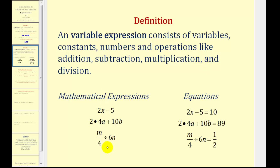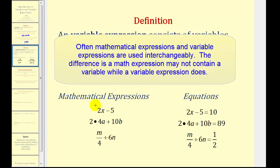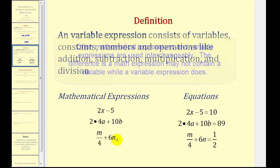So here are three examples of mathematical expressions. The first expression is 2x minus 5. Remember 2x means 2 times x. Next, we have 2 times 4a plus 10b, and the last expression is m divided by 4 divided by 6n.